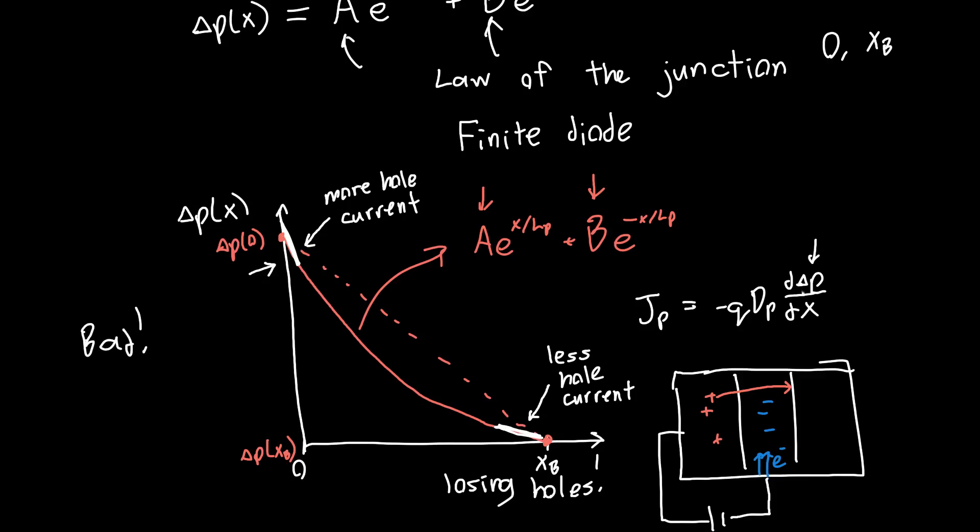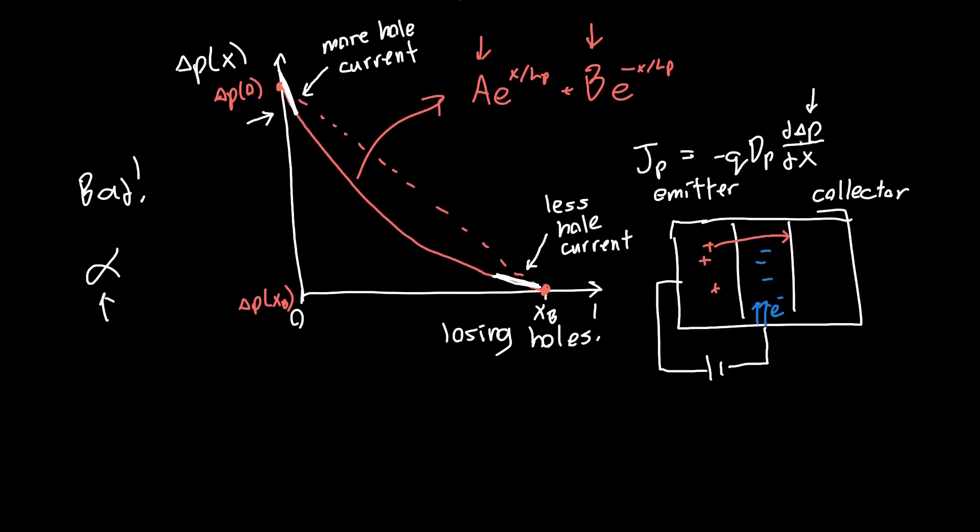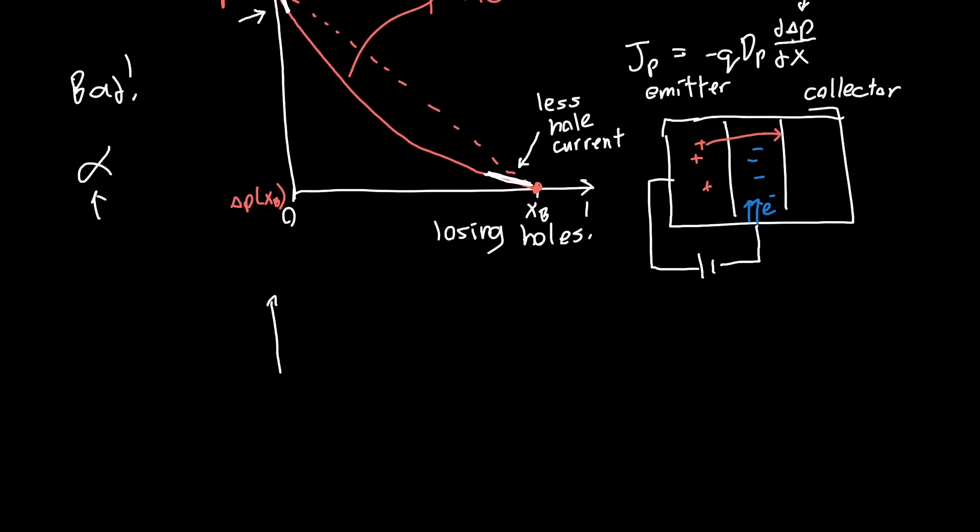We don't want that. That reduces our alpha, our efficiency of carriers getting from the emitter to the collector. And the larger xB gets, the worse this situation becomes. In fact, if xB were infinitely long, so we had an infinitely long base, then we know that the carrier concentration is just going to be a decaying exponential. It's just going to look like e^(-x/LP).